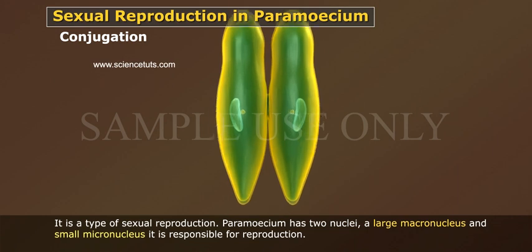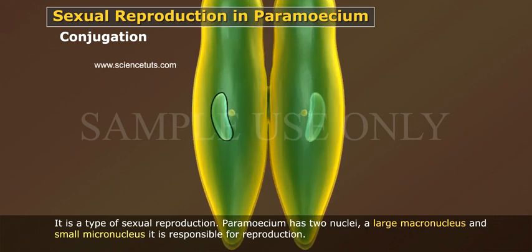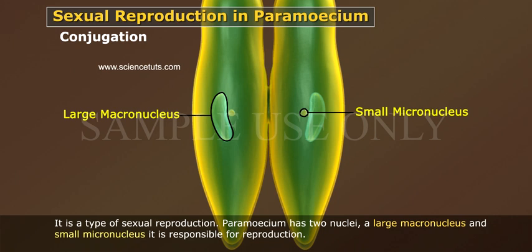Paramecium have two nuclei: a large macronucleus and a small micronucleus. The micronucleus is responsible for reproduction.